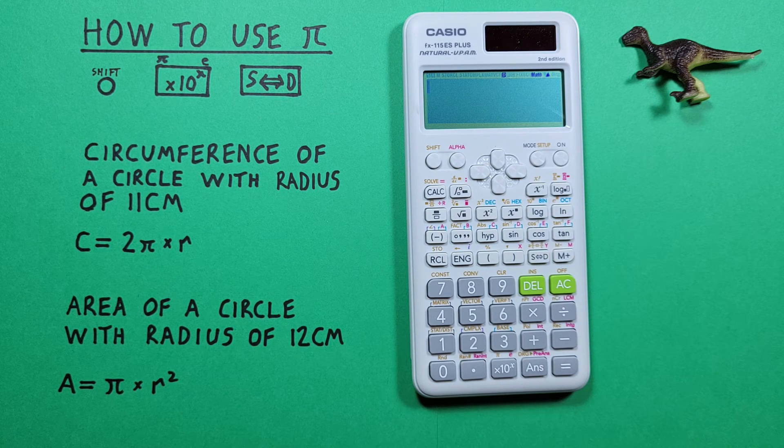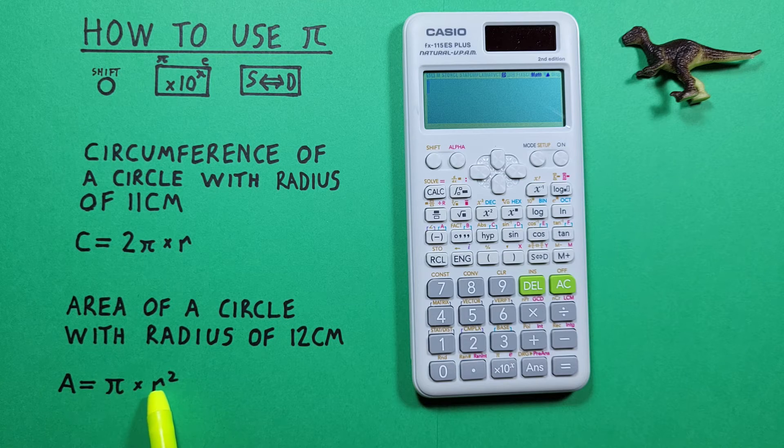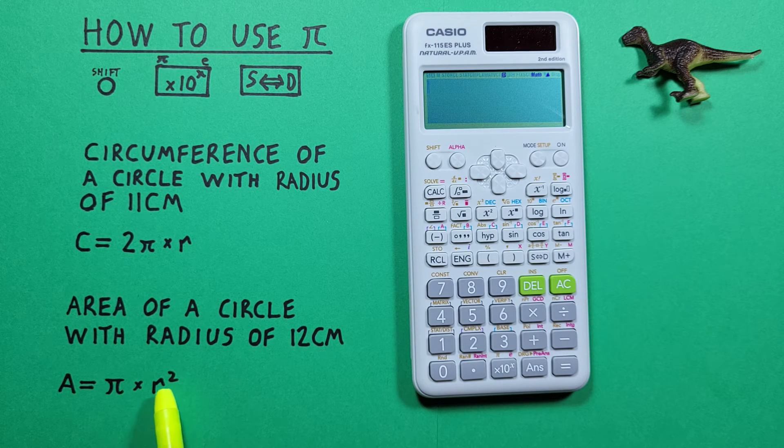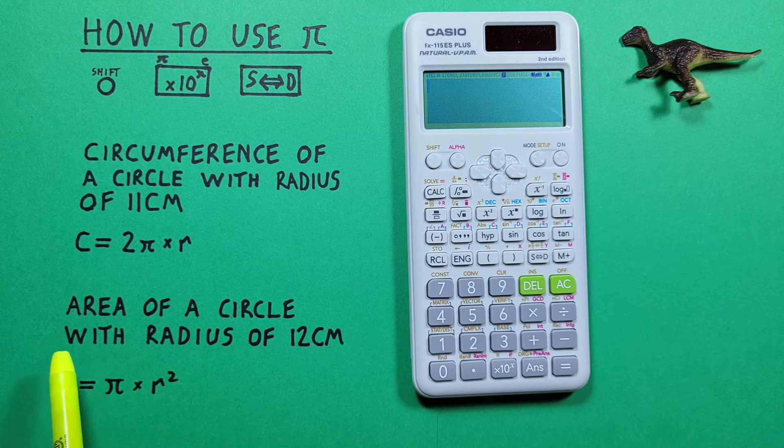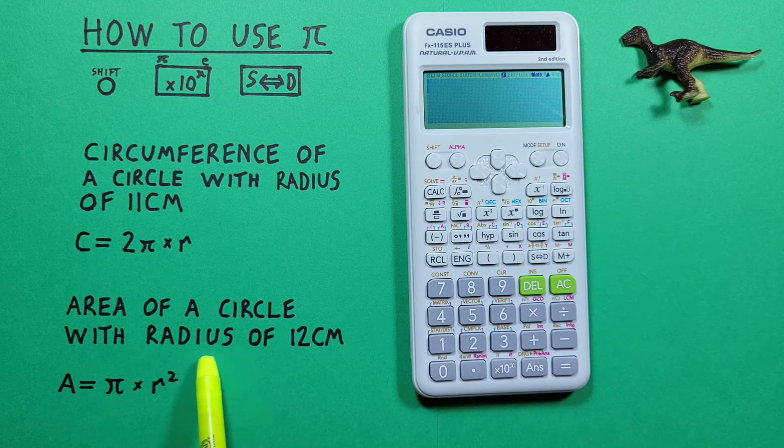We can also use this to calculate the area of a circle with this formula here: pi times r squared. So if we want to find the area of a circle with a radius of 12 centimeters.